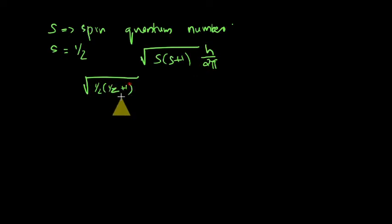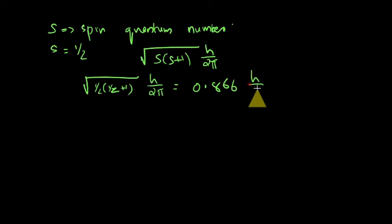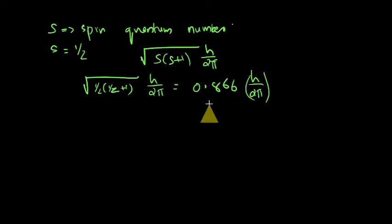The spin angular momentum of the electron equals the square root of (1/2)(1/2 + 1) times h divided by 2π, which is equal to 0.866 h divided by 2π. This is the magnitude of the spin angular momentum of the electron.